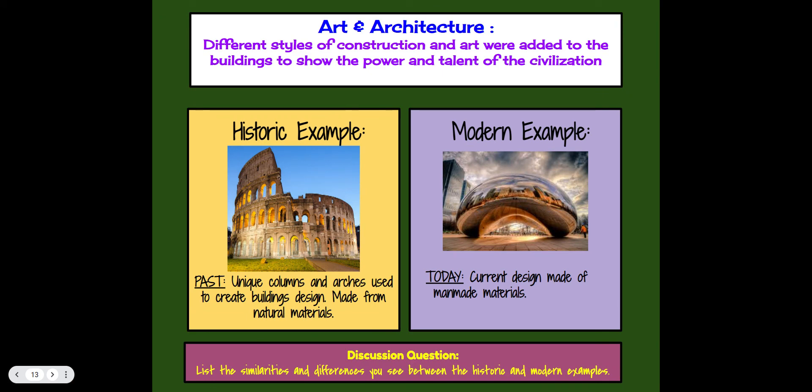Art and architecture refers to the different styles of structure, construction, and art added to buildings to show the power and talent of a civilization. A historic example would be the unique columns and arches used in ancient buildings made from natural minerals — like the Colosseum and other amazing structures still standing today. A modern example uses man-made materials. Write down similarities and differences you see between historic and modern examples of art and architecture.